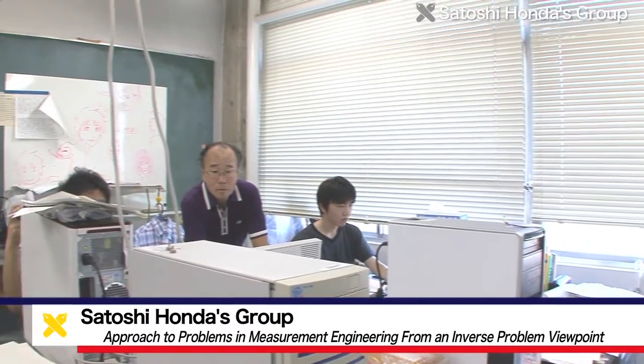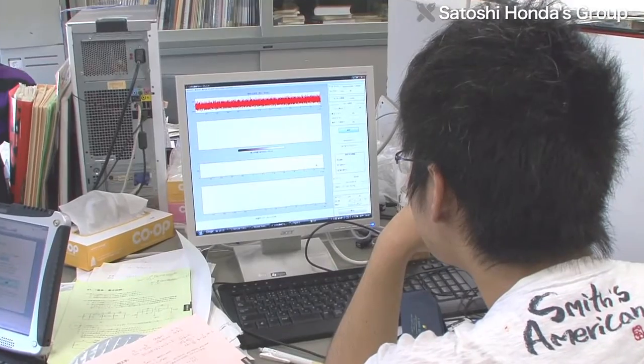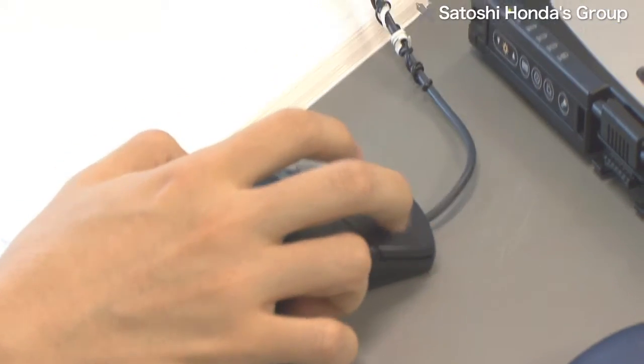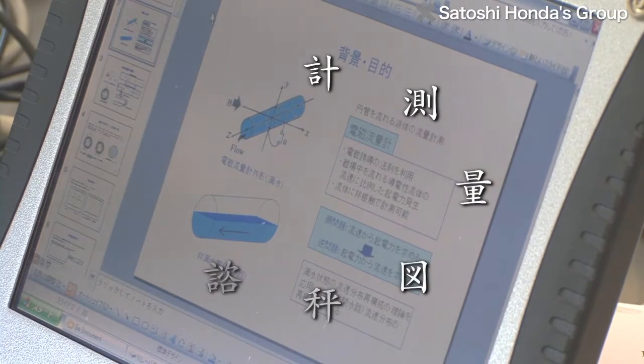Measurement is the basis of science, so much so that it's been said there is no science without measurement. This is because measurement gives science objectivity. The Honda Group is studying measurement from various perspectives, such as what should we measure and how should we measure it.